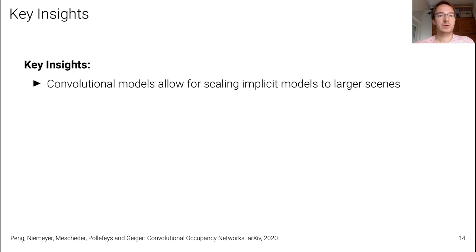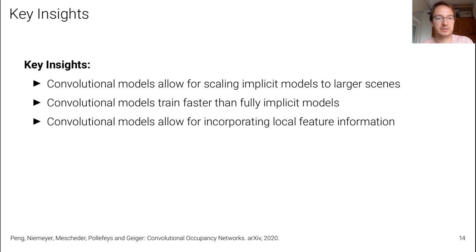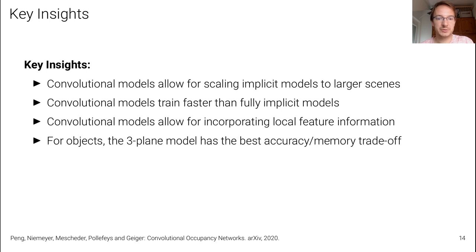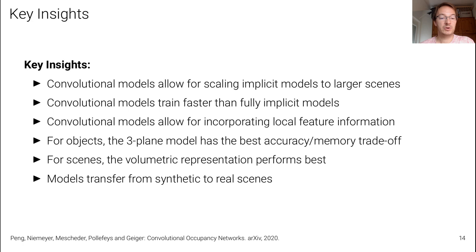The key insights are: convolutional models allow scaling implicit models to larger scenes, even as large as the Matterport dataset; convolutional models also train faster than fully implicit models and allow incorporating local feature information. For objects, the 3D three-plane model has the best accuracy-memory trade-off, while for larger scenes the volumetric representation works best. Models using point clouds as input transfer quite well from synthetic to real scenes.